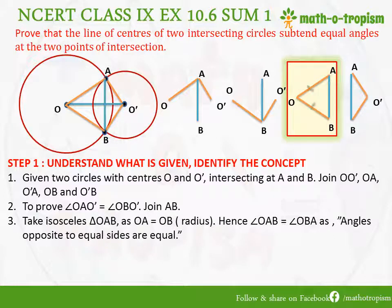For the isosceles triangle OAB: OA is equal to OB because both are radii. In an isosceles triangle, two sides are equal and the angles opposite those equal sides are equal — the base angles are equal. So angle OBA will be equal to angle OAB.